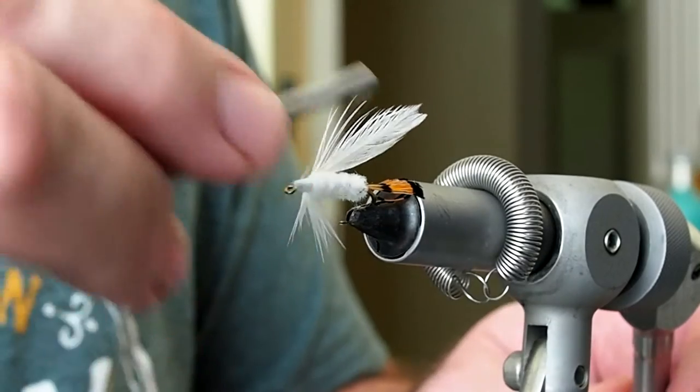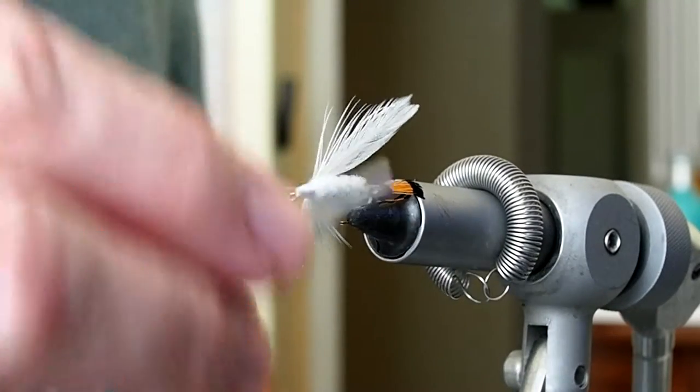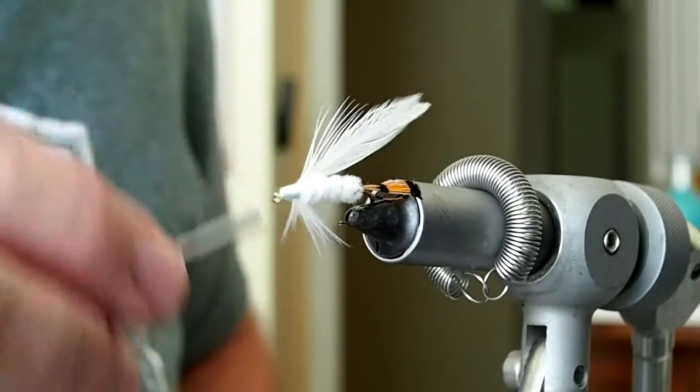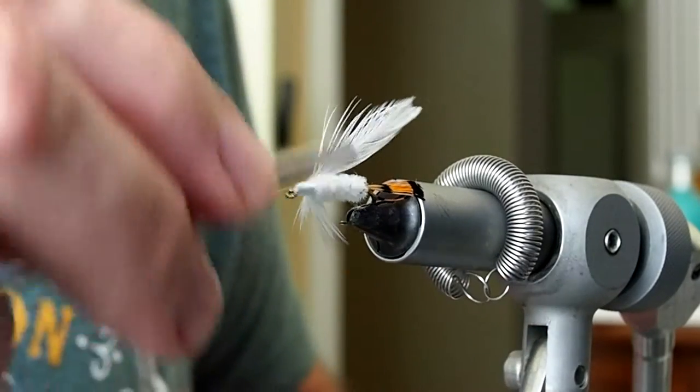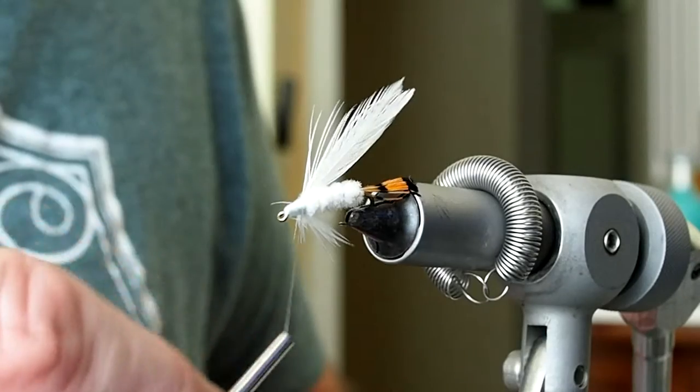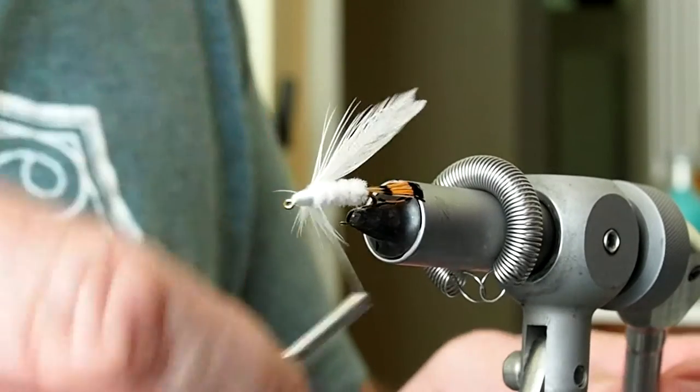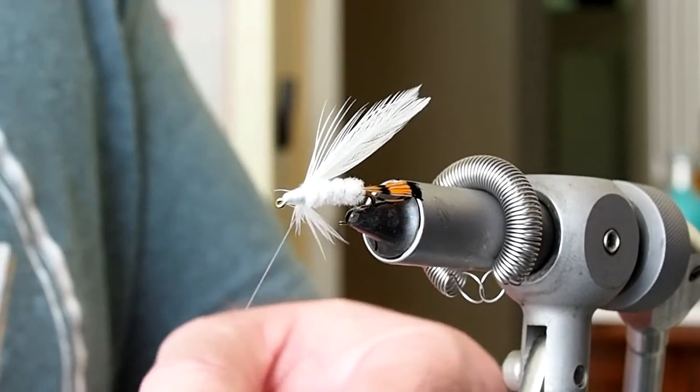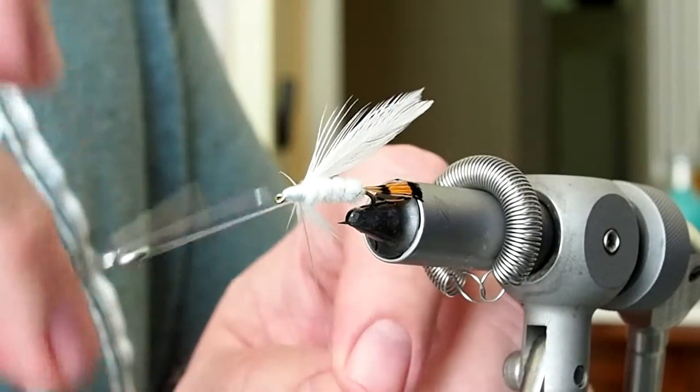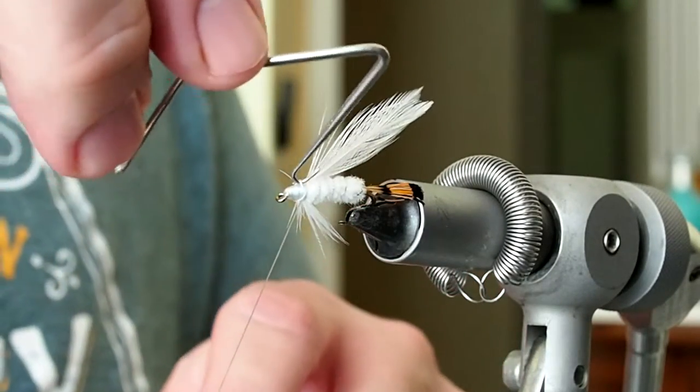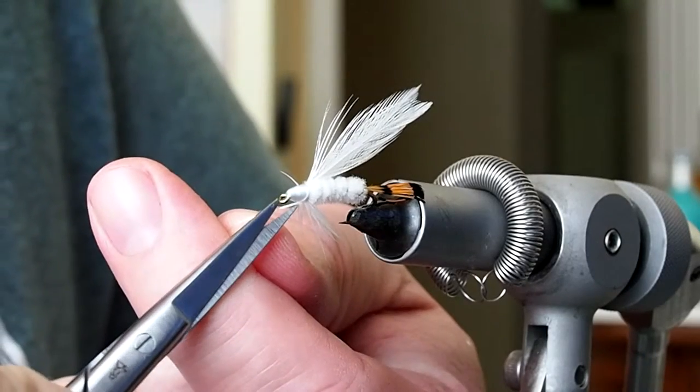You need a decent sized cone head because the pattern calls for some red eyes to be painted on. Go ahead and give it a whip finish and trim away our thread.